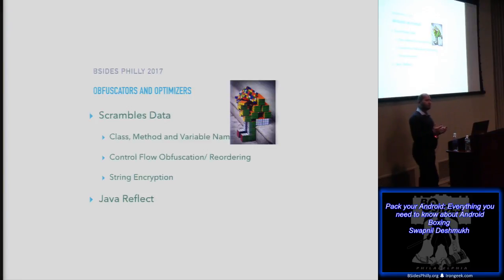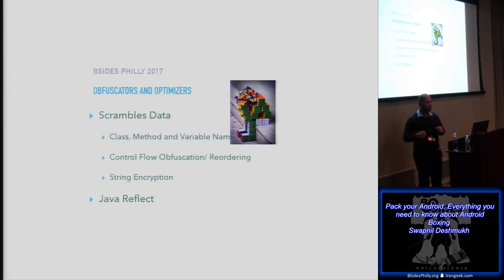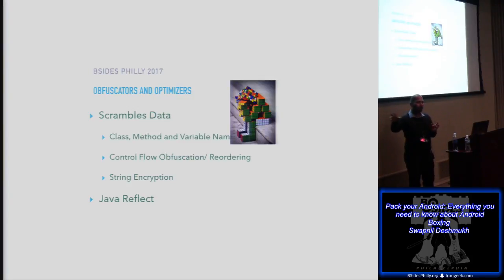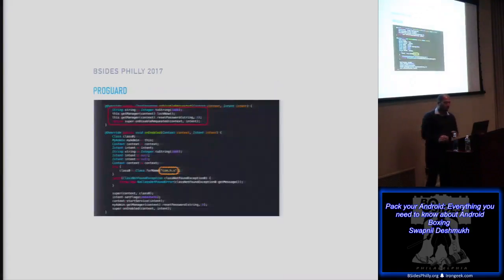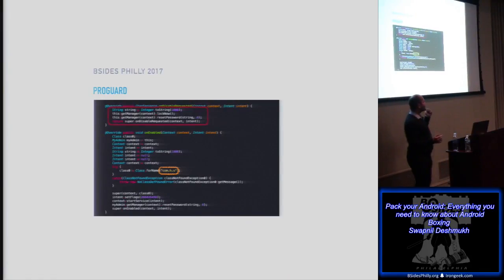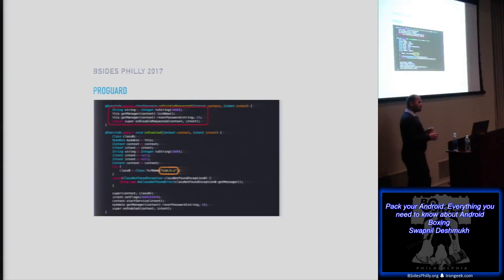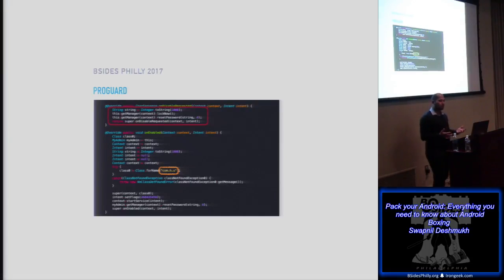Java reflection and string encryption together make code very difficult to read. They encrypt the entire string and put it in the Java bytecode. On top of that they use Java reflection, calling Class.forName() or Method.forName() with an encrypted string. You first have to decrypt that string in order to understand what the next action would be.